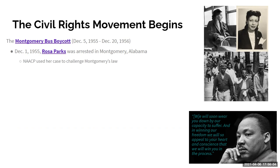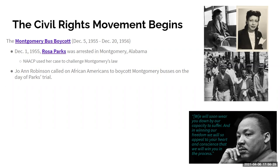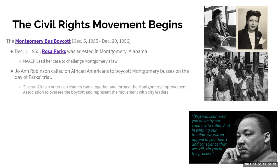She was arrested, and the NAACP — with her permission — took up her case to challenge the constitutionality of Montgomery's segregated bus laws. In the meantime, another woman, Joanne Robinson, called on all African Americans in Montgomery to boycott the buses on the day of Parks's trial, December 5th. Several African-American leaders came together to form the Montgomery Improvement Association — an organized group to oversee the boycott and represent the movement with city leaders. This was not a random act — it was an organized, mobilized community.